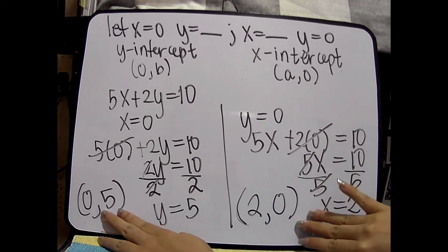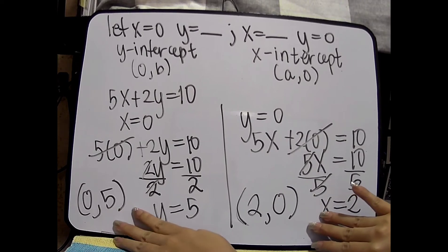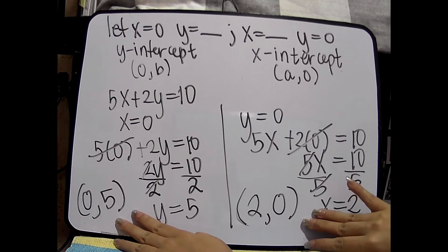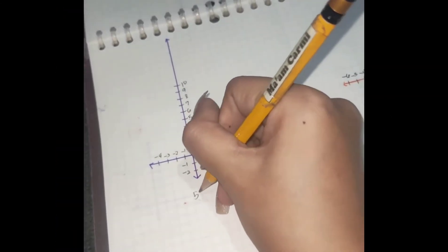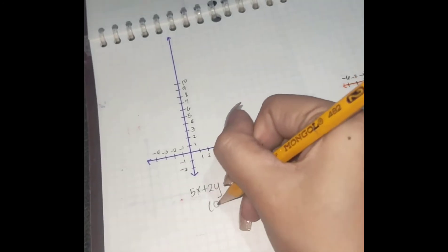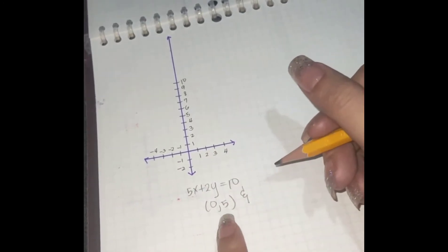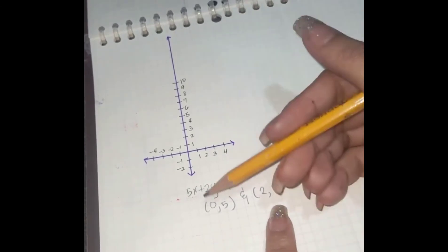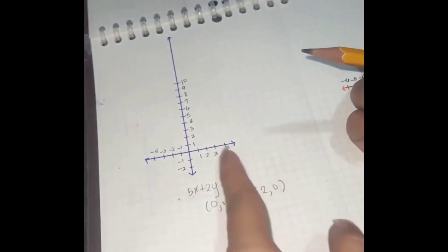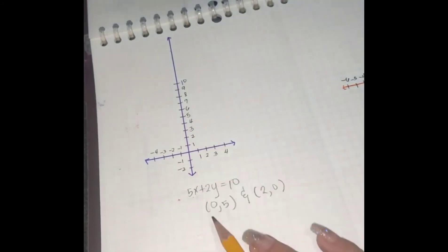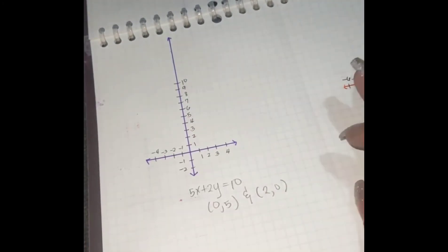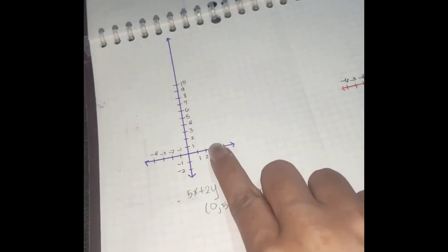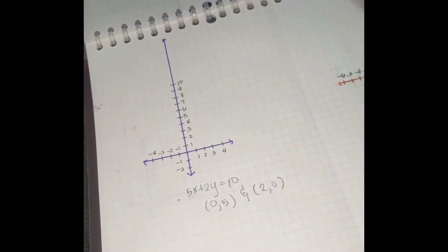So, these two ordered pairs, i-graph to — i-plot natin sa coordinate plane, and then pag na-plot na, connect the dots na. So, let's graph our 5x plus 2y equals to 10. Nakuha natin yung (0, 5), and this is our y-intercept, and then (2, 0), which is ito naman yung x-intercept natin. As you can see, hindi ako nag-graph nung centered talaga yung coordinate plane — I just used the portion na kung kailangan ko lang yung quadrant 1, quadrant 2, or kung kailangan ko lang yung small portion ng quadrant 4 and quadrant 3.